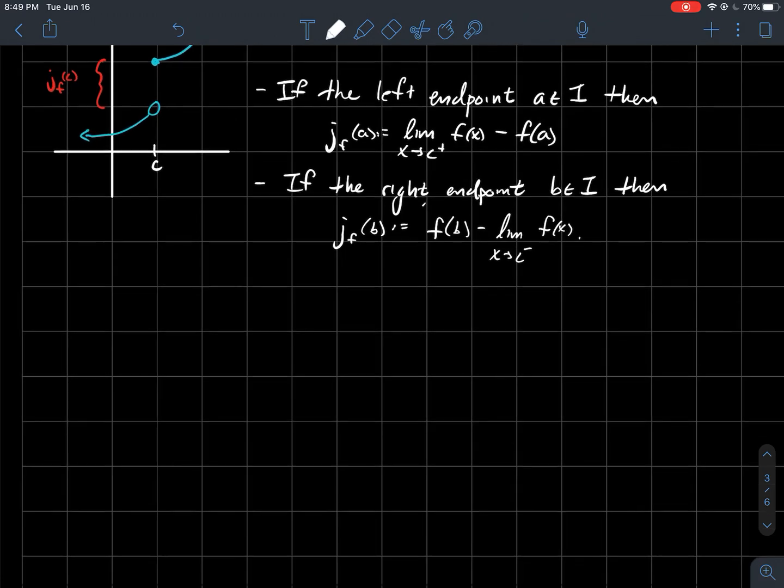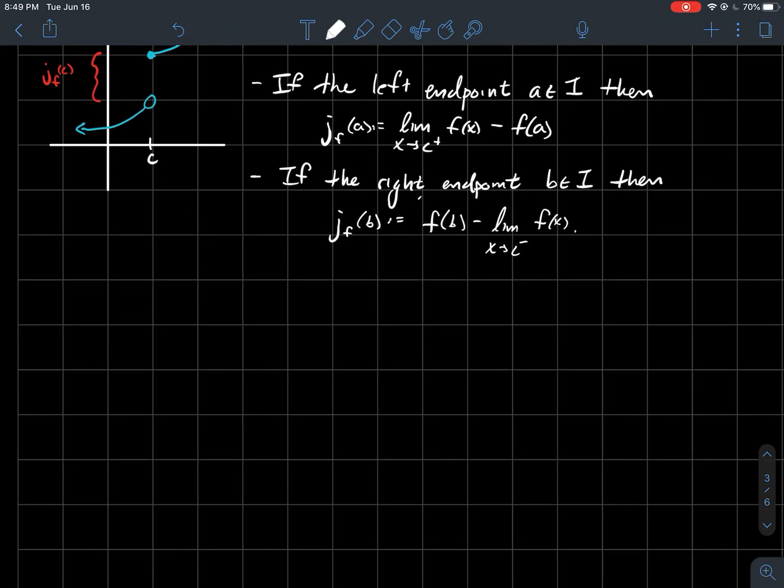And you could do a similar kind of thing if you're talking about the jump at your right hand point of your interval, call it b. So f of b should be the tallest point on the graph since your function's increasing. Therefore, the jump of f at b should be f of b minus the left-hand limit of your function as you get close to b.